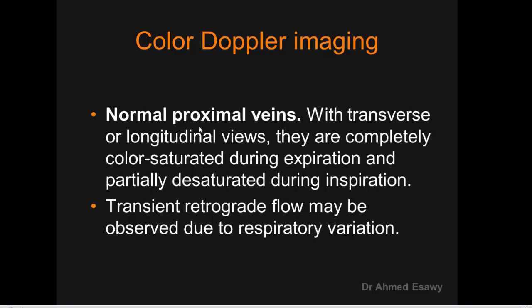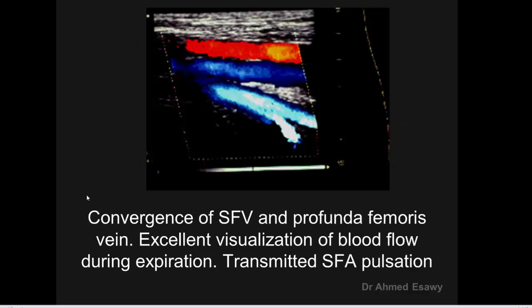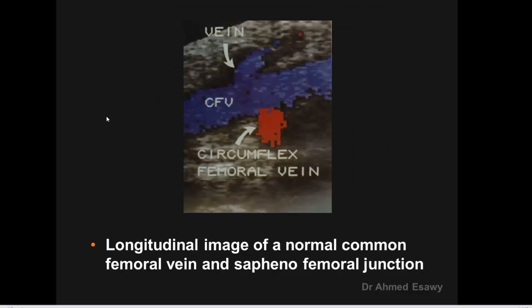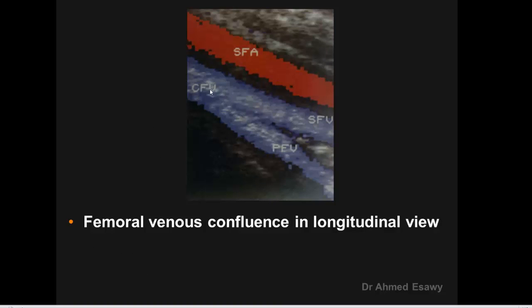Color Doppler imaging: normal proximal veins in transverse and longitudinal views are completely color-saturated during expiration — common femoral vein, superficial femoral vein, popliteal vein — and partially desaturated during inspiration. Convergence of superficial femoral and profunda femoral with excellent visualization during expiration. Normal common femoral vein is shown receiving blood from the great saphenous vein and formed by superficial and profunda femoral veins — completely color-saturated, normal appearance.